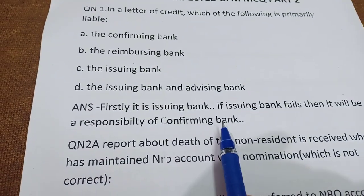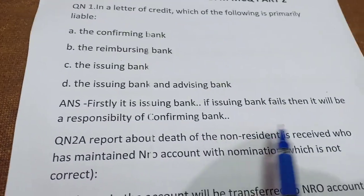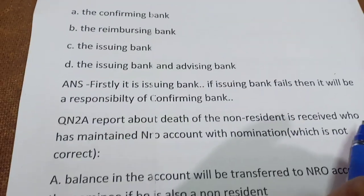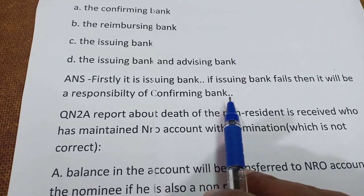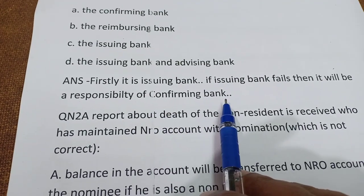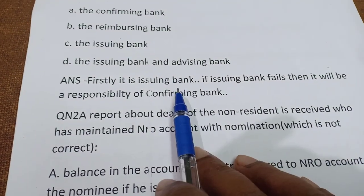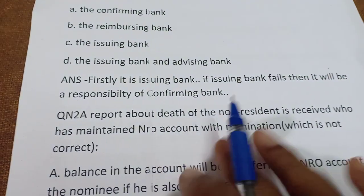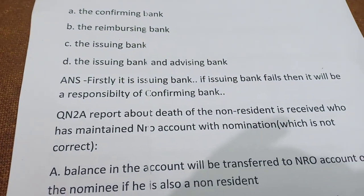Firstly, it is the issuing bank. If the issuing bank fails, then it will be the responsibility of the confirming bank. The issuing bank is primarily liable for the LC.